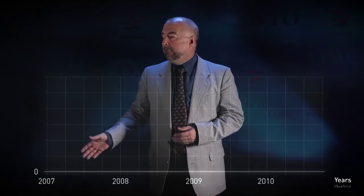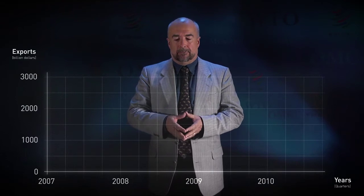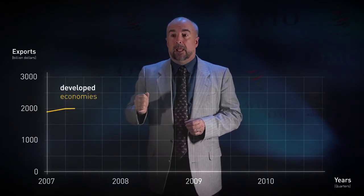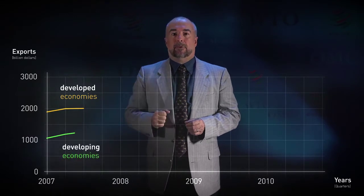On this graph, we'll have first on the horizontal axis the passing of time, from the first quarter of 2007 to the last quarter of 2010. And on the vertical axis, we'll have the value of exports in billions of dollars. To make things simpler, instead of looking at the evolution of each country, we'll have only two groups of countries: the exports from developed economies and the exports from developing economies.